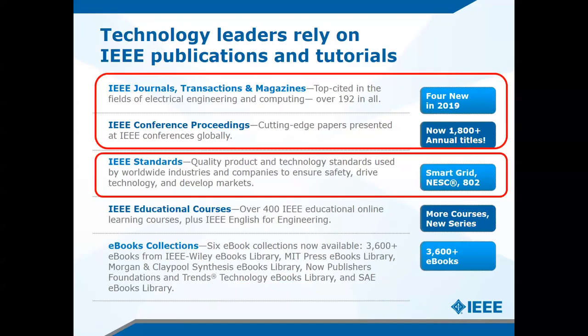The five core content categories in IEEE Xplore are: journals, transactions, and magazines — which cover full-length research papers; conference proceedings — the latest research methodologies; IEEE standards — guidelines used by engineers, industries, and companies to design, produce, manufacture, and provide services; educational courses — online learning modules; and e-books. I'm highlighting the first three because as an author, especially a graduate student, you need to publish in journals and conferences, and as an engineer you will use IEEE standards.